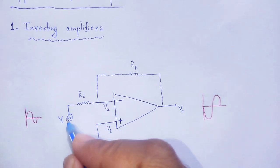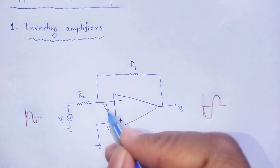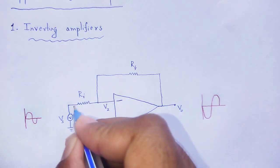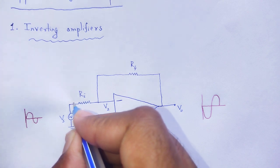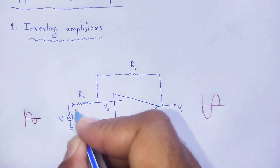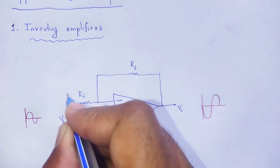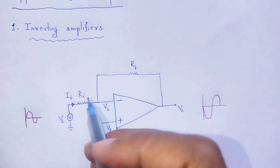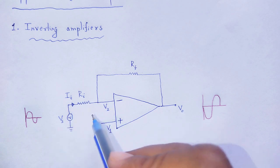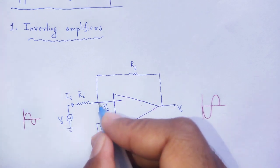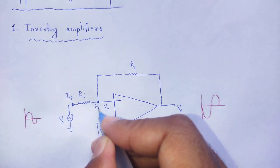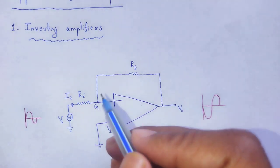As that signal is applied to that of the inverting terminal, let Ii amount of current flow. At that end, let that node G, current is divided.